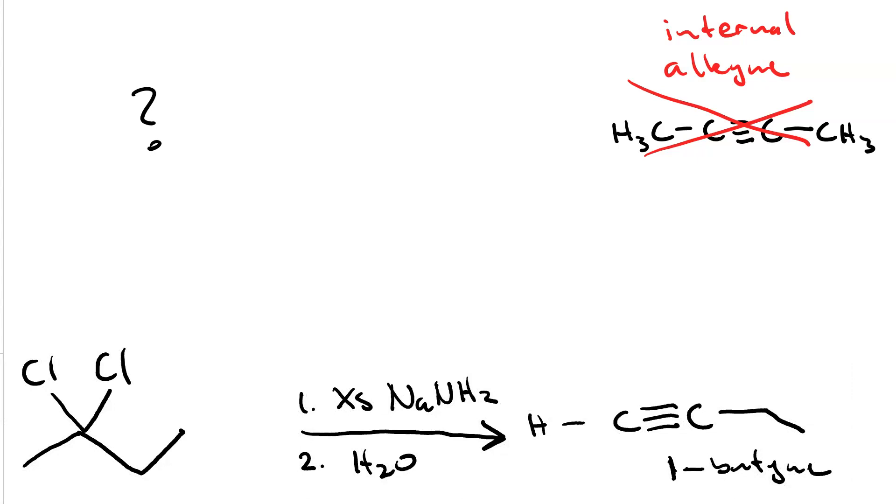What then is the combination of substrate and reagents that'll get us to an internal alkyne? There is a method if we just use excess NaNH2 and we have the right starting material, namely a vicinal dihalide 2,3-dichlorobutane. This will give us the alkyne but it will be in very low yield.